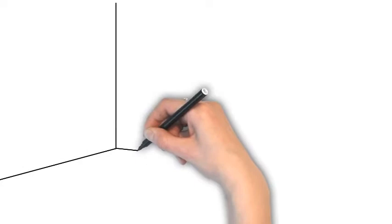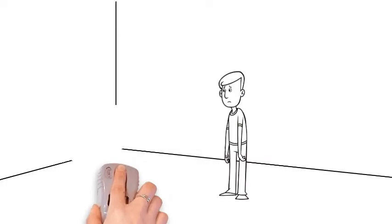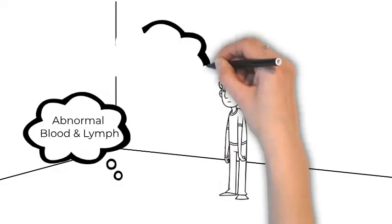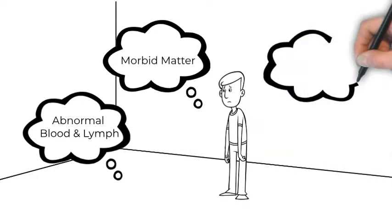So then, why do we get sick? Dr. Henry Lindlar stated in the early 1900s that we would get sick because of three things. Abnormal composition of blood and lymph. Accumulation of morbid matter and poisons. And, of course, lowered vitality.